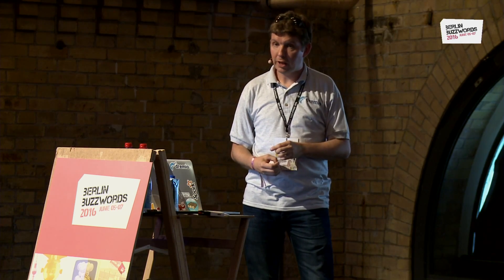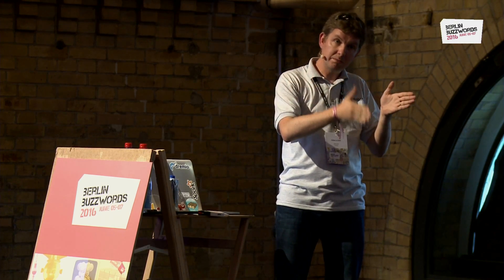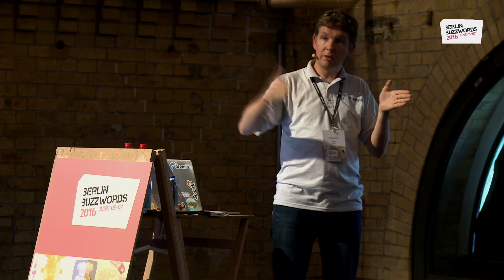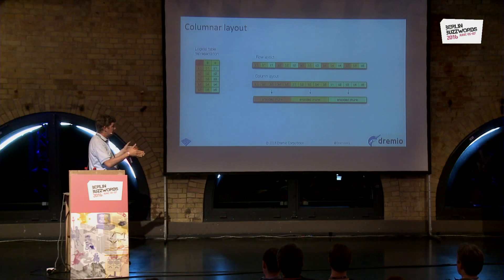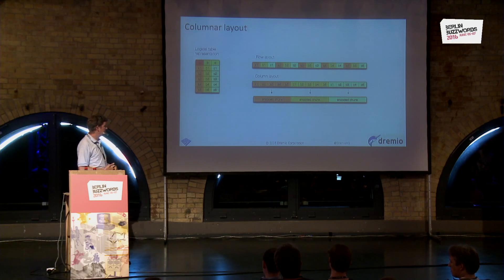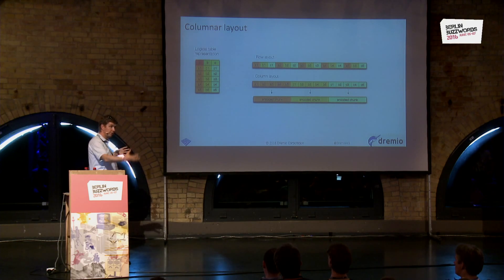For example, if you have an integer column and you know the maximum value, you can use only the number of bits required for that maximum value and bit-pack them to use far less than four bytes per value. Similarly, compressing strings with algorithms like LZW, Snappy, or similar is much more efficient when you're putting together homogeneous things rather than mixing many different types together.